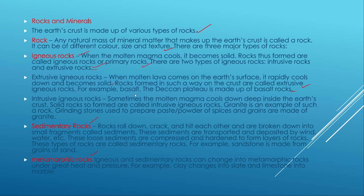Igneous rocks are made up of molten magma. There are two types: intrusive and extrusive. Intrusive igneous rocks form when molten magma cools down deep inside the earth's crust, forming solid rocks inside the earth.